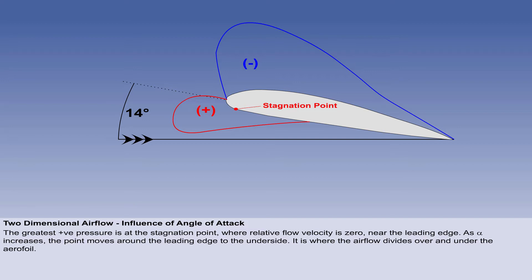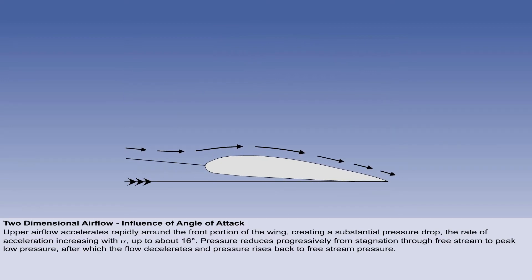The stagnation point is where the airflow divides over the upper and lower surfaces, and pressure here is static plus dynamic. The flow over the top accelerates rapidly around the leading edge and over the front portion of the wing, creating a substantial static pressure drop. The rate of acceleration increases with alpha, up to about 16 degrees.